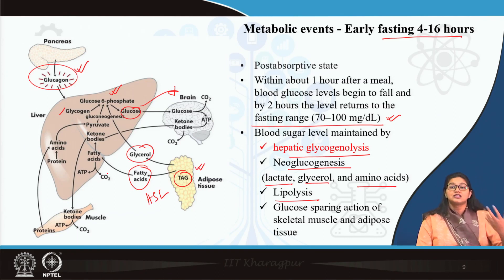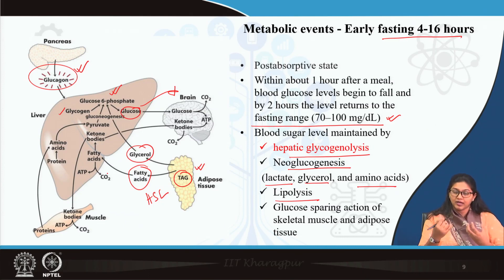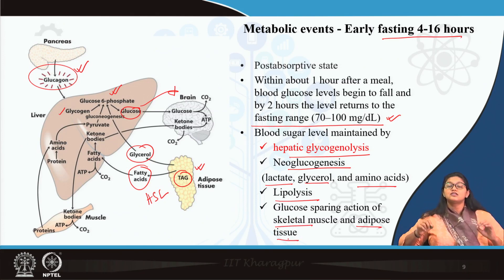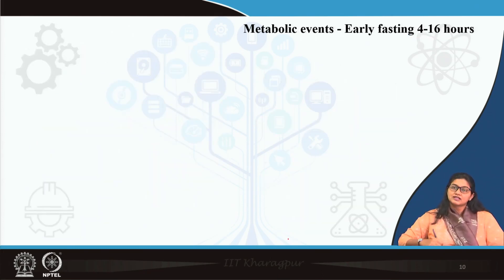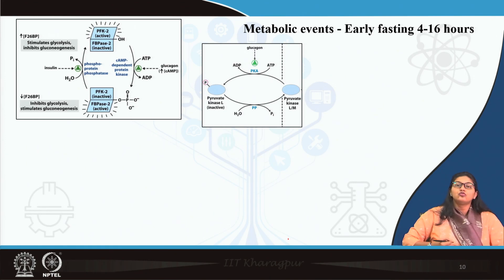Whatever glucose is available from glycogenolysis, neoglucogenesis, or lipolysis is not utilized by skeletal muscle or adipose tissue — these organs spare glucose for brain and RBCs so they can survive. The metabolic events in the early fasting phase are controlled by glucagon.